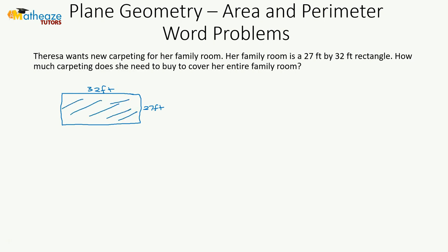We're told here that the carpeting must cover the entire room, so we're dealing with the area. The area of a rectangle is length multiplied by width, which here is going to be 32 feet multiplied by 27 feet.